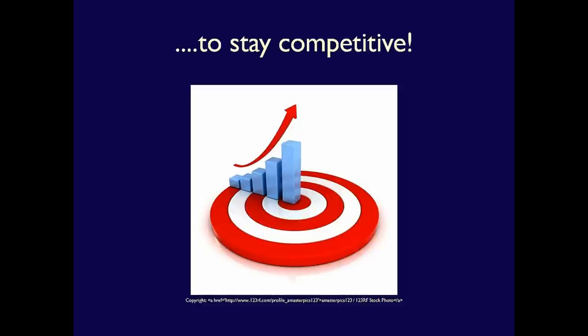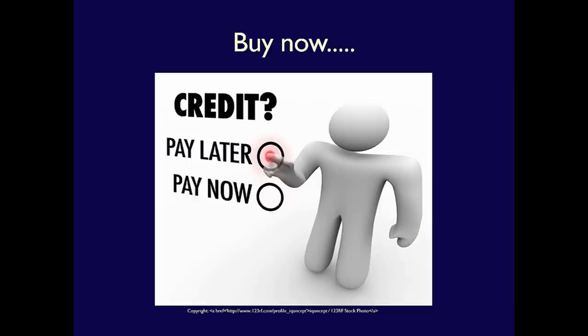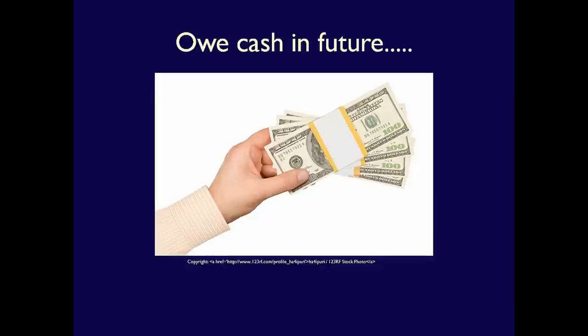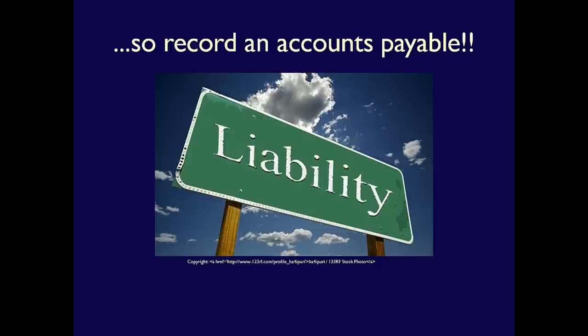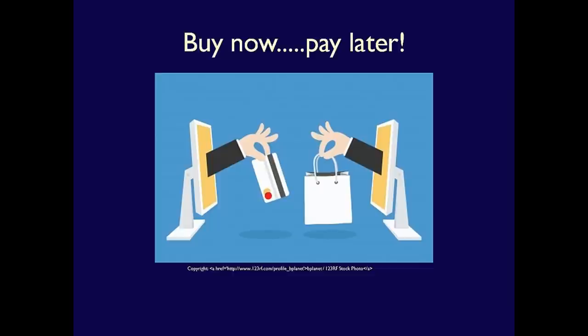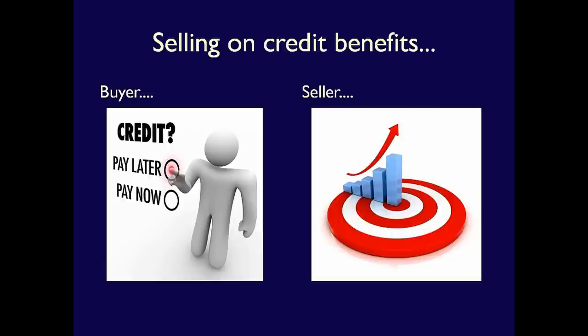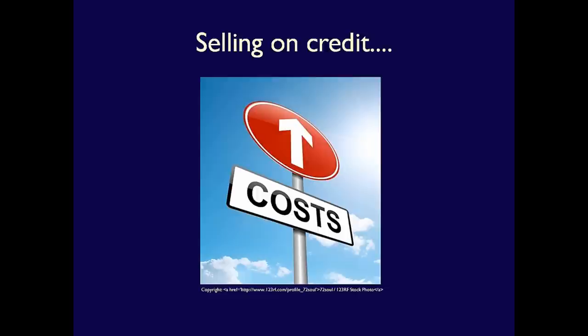In order to remain competitive, companies have to sell on account. Why do companies want to buy on credit? Because they can get the product or service without paying any cash today. Yes, they still owe cash in the future — a company who buys on credit records accounts payable, a liability. But they benefit because they get the product or service now, maybe 30 or 45 days before they have to pay. Selling on credit benefits the customer, but the seller doesn't get their cash right away, which has a cost — and we'll understand the full cost by the end of this video.